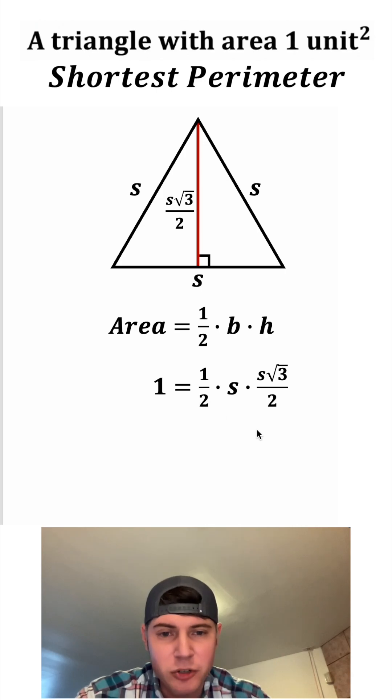So we can multiply these denominators. Two times two is gonna give us four and then S times S is S squared. And we can multiply this root three by this one to give us root three over four.